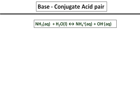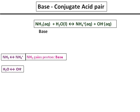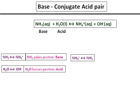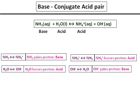Consider the equation: ammonia, a base, reacts with water to give you ammonium ions and OH minus ions. Ammonia is accepting a proton, therefore it is a base, and water is losing a proton and therefore it is an acid. In the reverse equation, ammonium ion is losing a proton to give ammonia — therefore that is an acid — and OH minus is gaining a proton, therefore OH minus is a base.